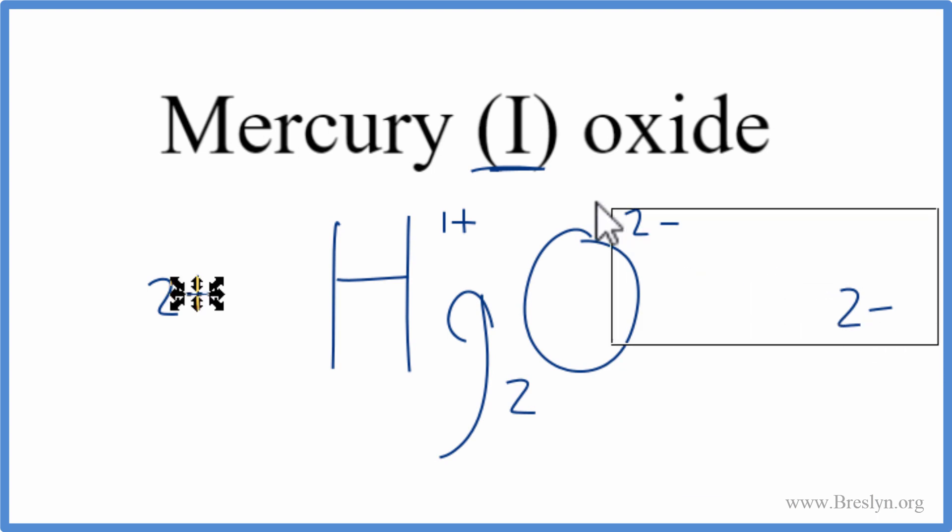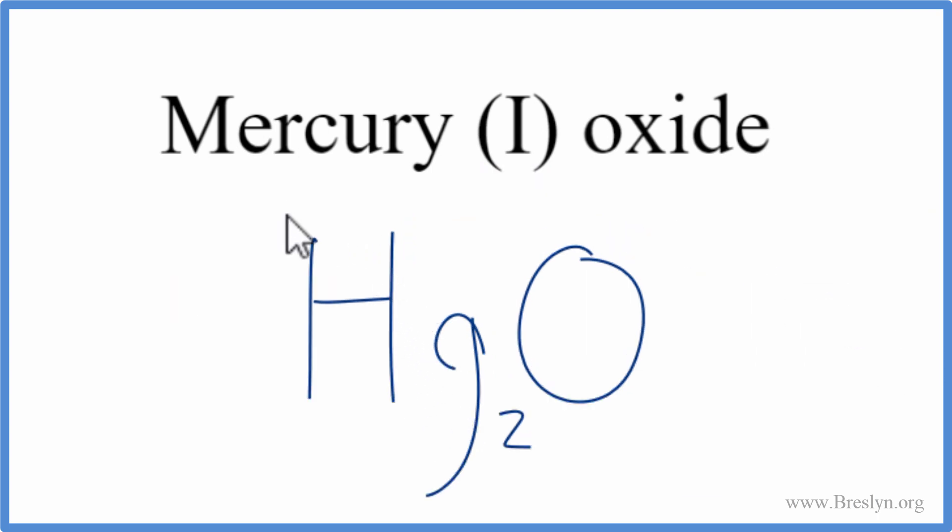Let's clean it up a little bit. And that's it. Mercury(I) oxide: Hg2O. This is Dr. B, and thanks for watching.